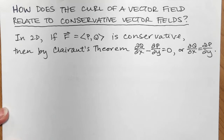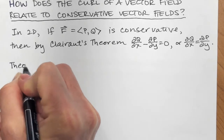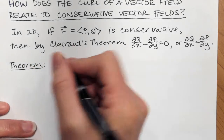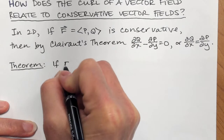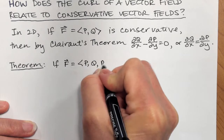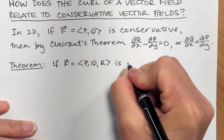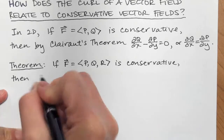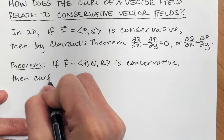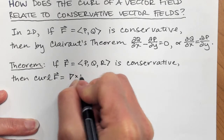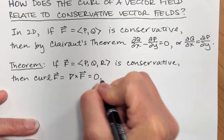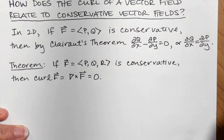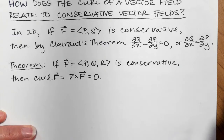So the 3D analog of this — theorem: if we have a vector field in three dimensions, so if f = (p, q, r), and we know that this vector field is conservative, then the curl of the vector field, curl f, which is ∇ × f, is zero. We're assuming the vector field is conservative and also that the second partial derivatives of f — the partial derivatives of p, q, and r — are defined and continuous.